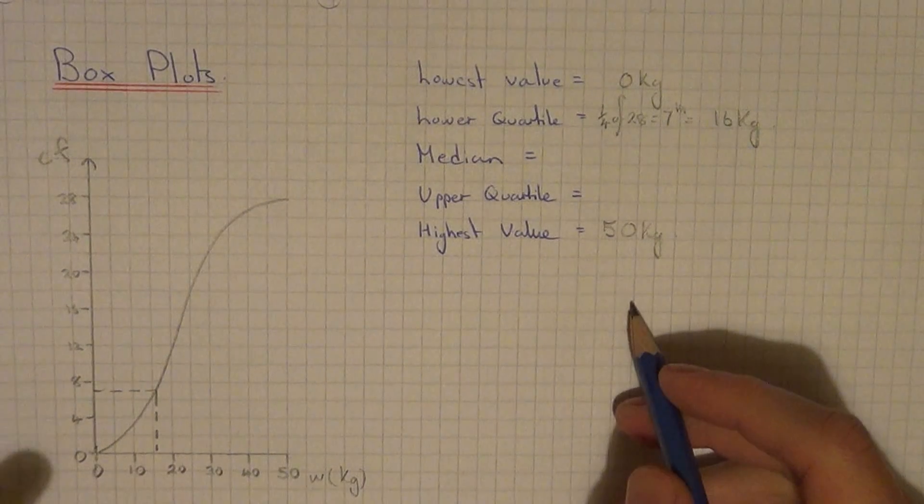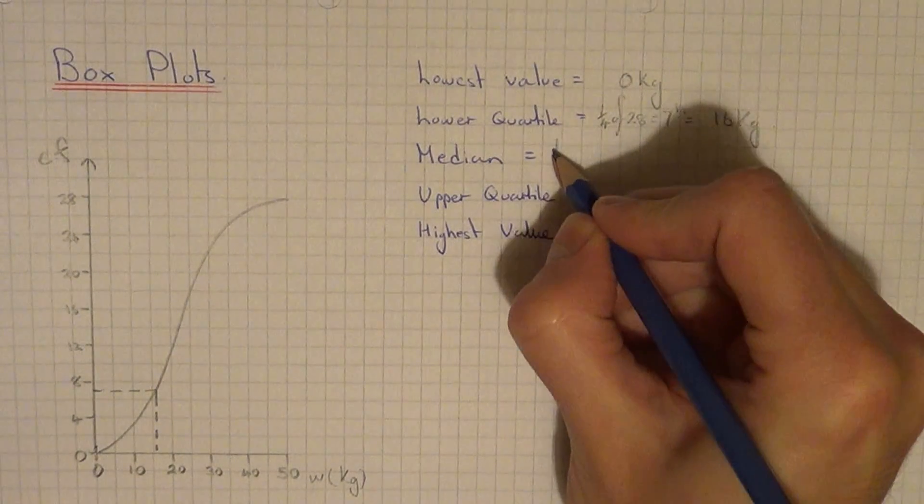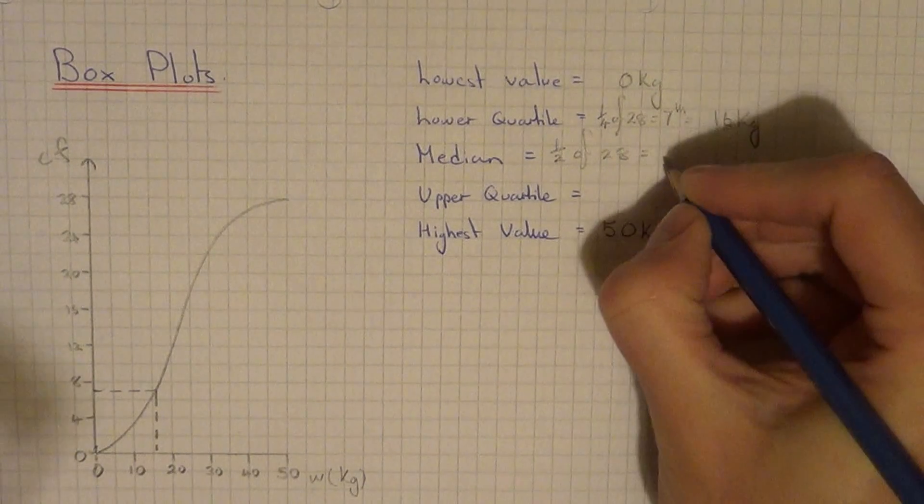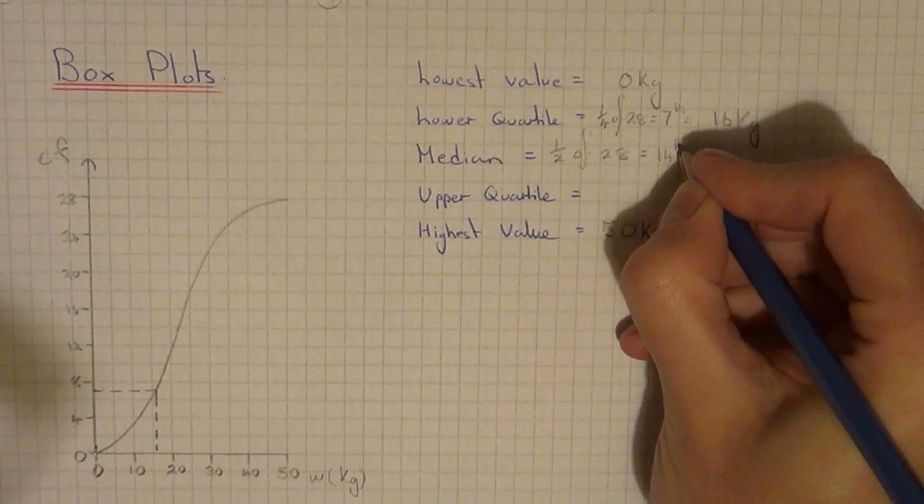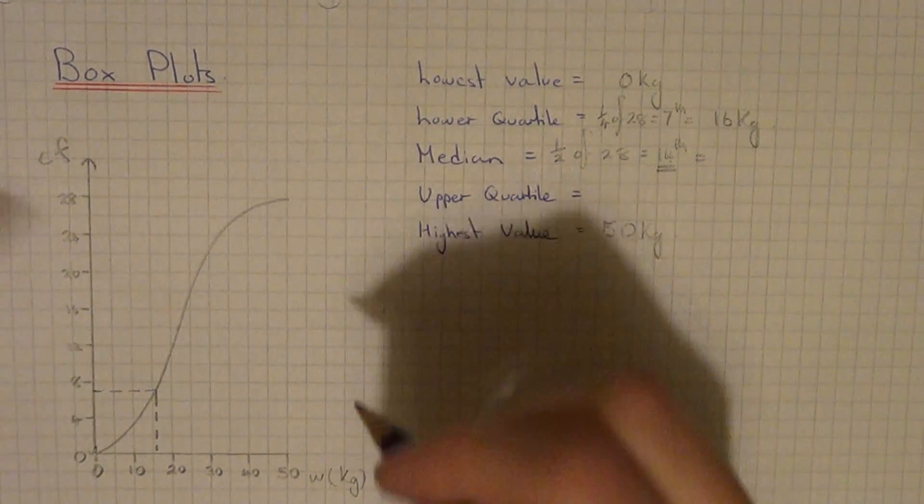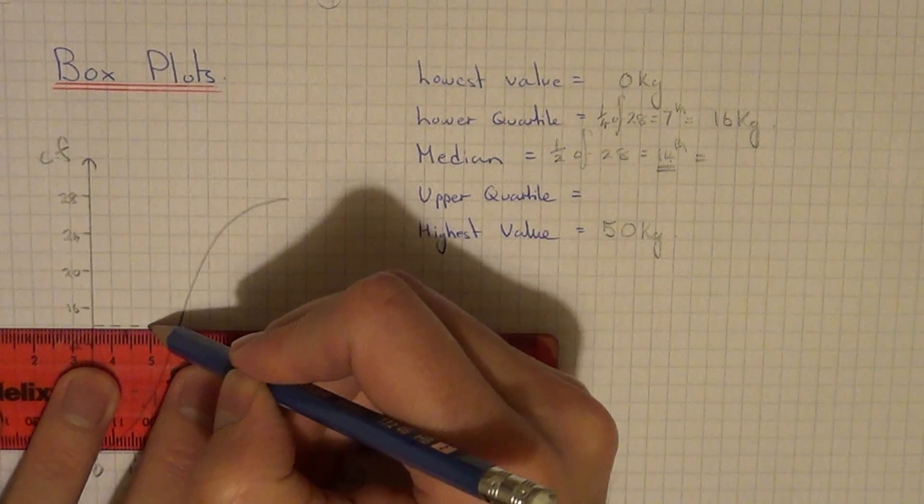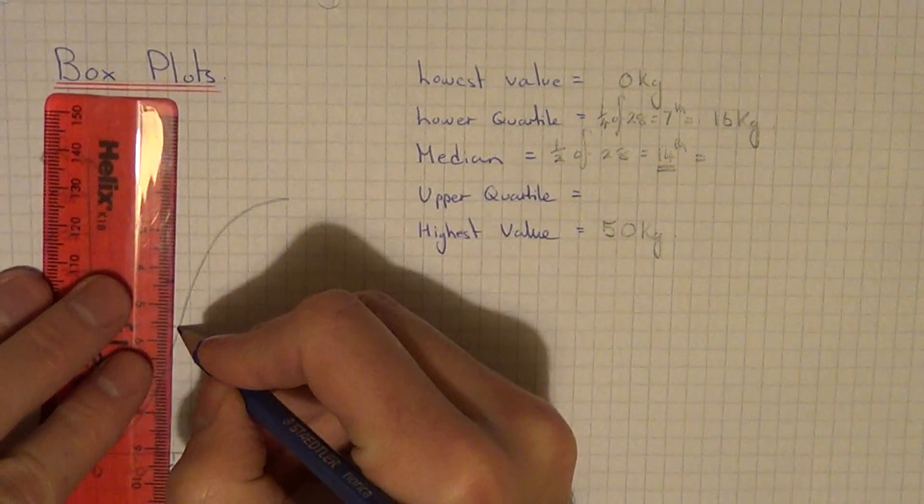So next let's work out the median. The median needs halfway up the curve so we need to do a half of 28 which gives us the 14th person. So if we go to 14 on the cumulative frequency which is here, read it off, this gives us about 22 kg for the 14th person.